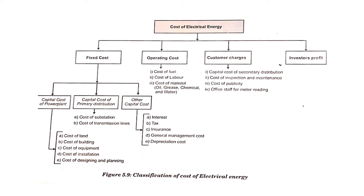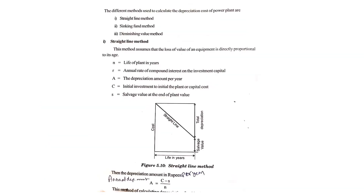Now we will see the different methods used to calculate the depreciation cost of a power plant, which is part of the fixed cost. Building cost, land cost, equipment cost, installation cost, and planning costs can all be easily calculated. Similarly, the cost of substations and transmission lines can be calculated. However, for other capital costs — particularly depreciation — we need mathematical methods to find the value.